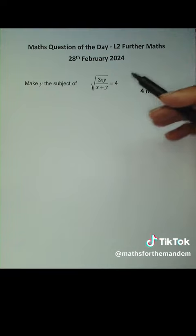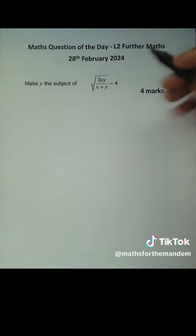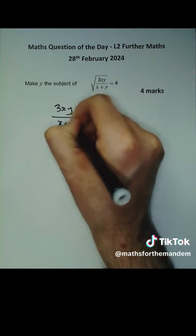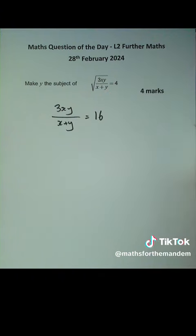Well, firstly, how do we undo a square root? Well, we just square. So first thing is I'm going to square both sides. That gets rid of the square root to leave me with 3xy over x plus y is equal to, now I've squared this side, so that's giving me 16. All right, already I've got rid of half the pain. Cool.